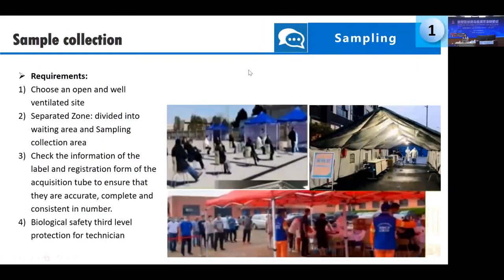For sample collection, we need to choose an open and well-ventilated site and separate the zones. The sample collection zone is divided into a waiting area and a sampling collection area — these two areas cannot be put together. We need to check the information on the label and registration form to ensure they are correct, complete, and consistent in number. Technicians require biological safety level 3 protection. The collection can be arranged outdoors or in designated spaces, as long as it is well-ventilated and separated.